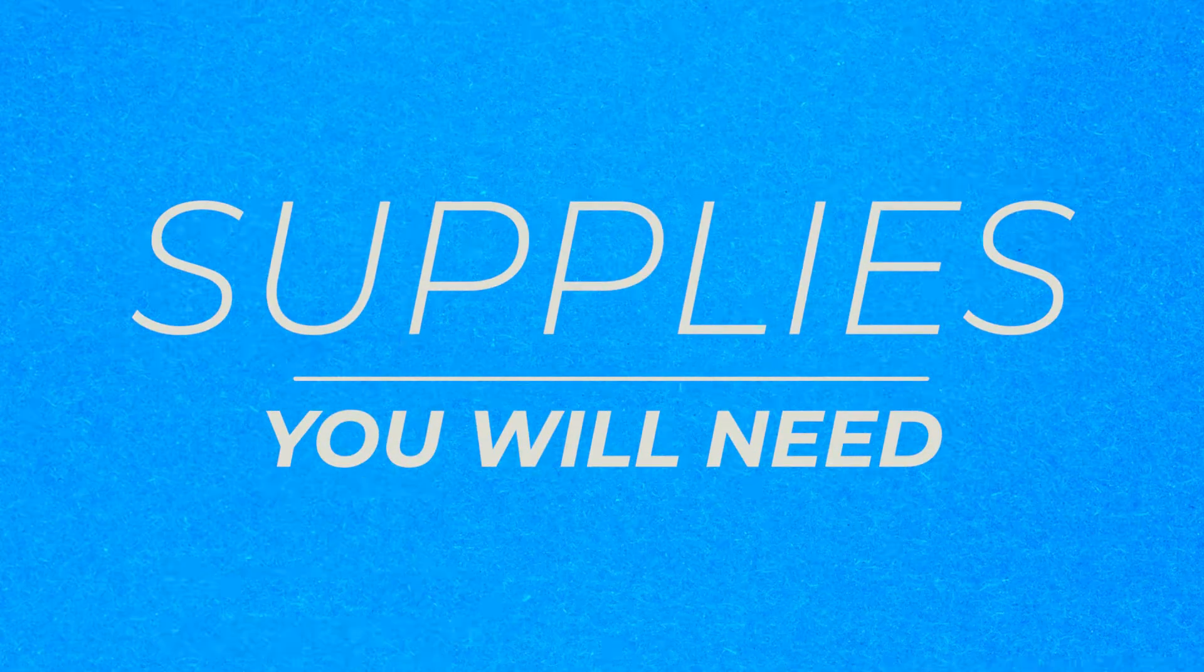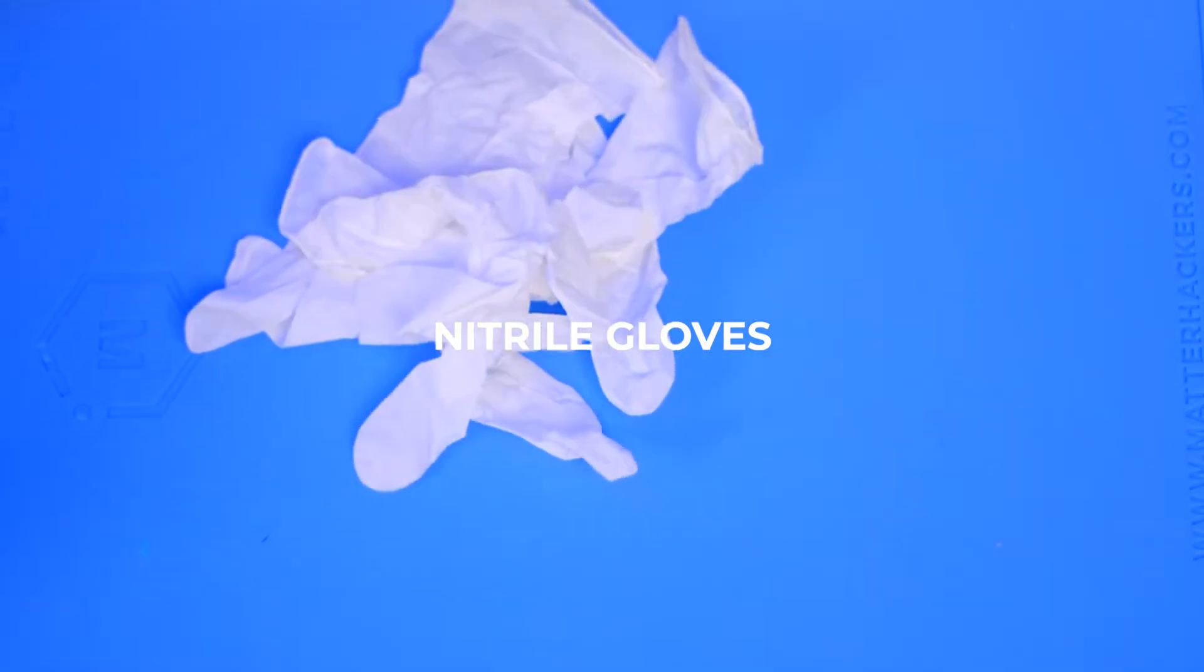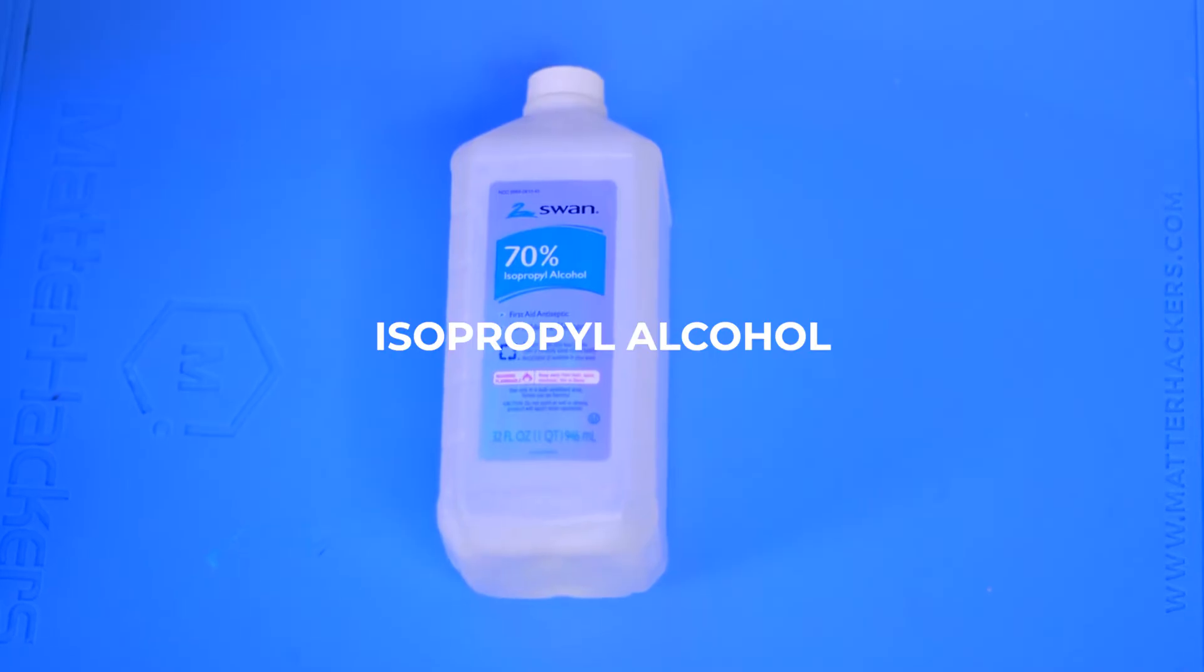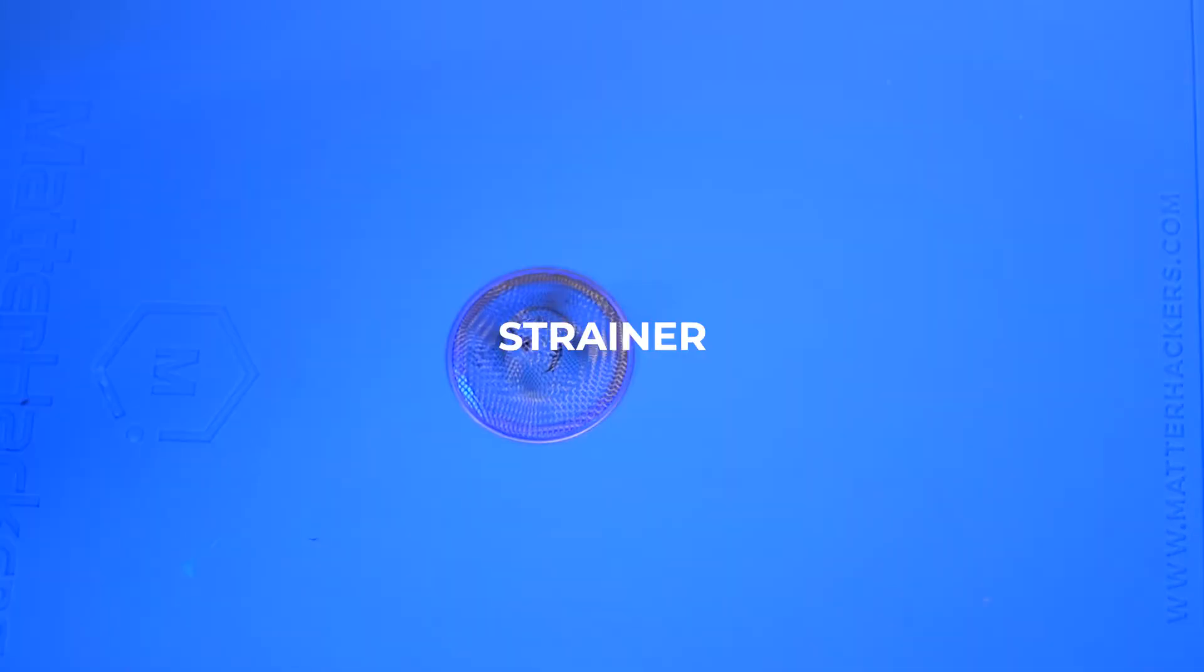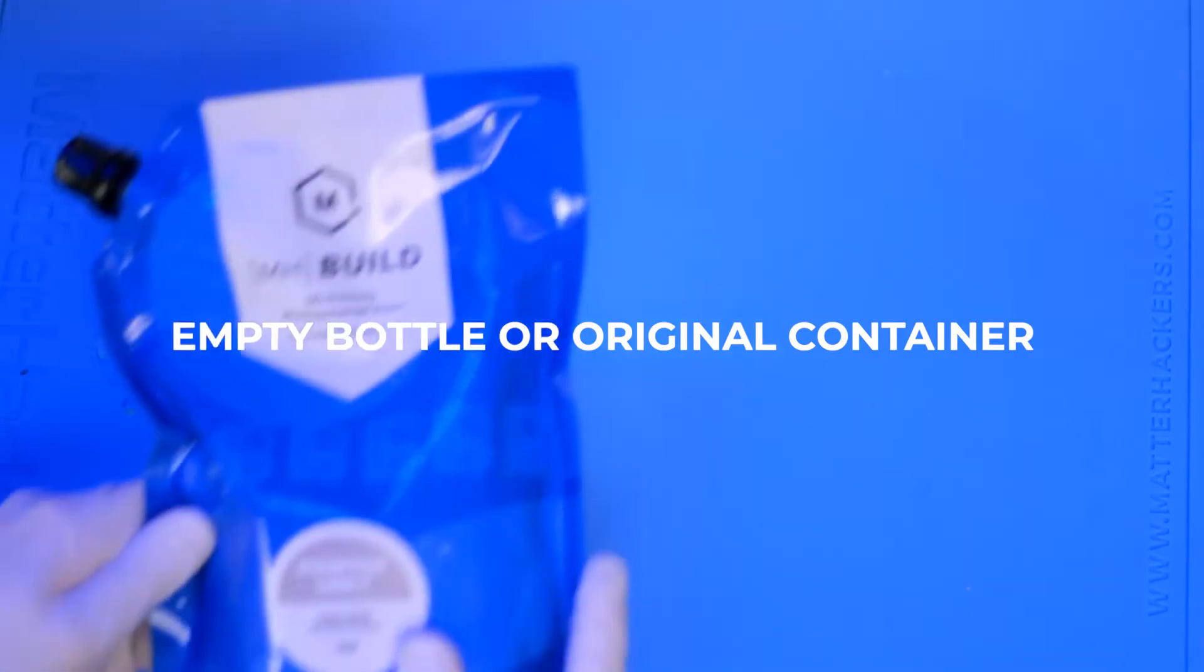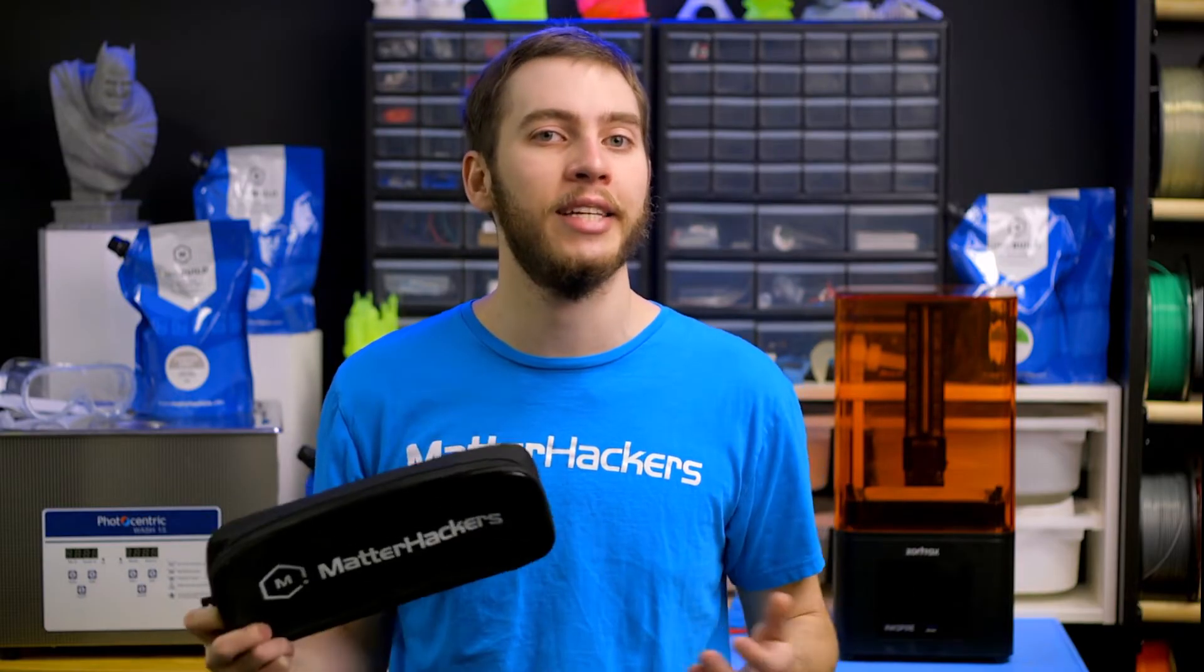Here are the supplies you'll need: workspace surface protection like a silicone mat or tarp, nitrile gloves, safety goggles, isopropyl alcohol, paper towels, rubber squeegee, UV lamp or a spot in the sun, strainer, silicone funnel, and an empty bottle for resin or its original container. Most of these items can be found in the MatterHackers Premium Resin Toolkit, which makes sourcing all these necessary tools quick and easy.